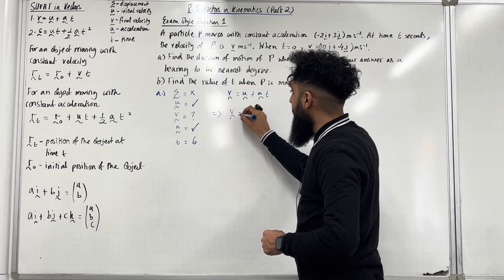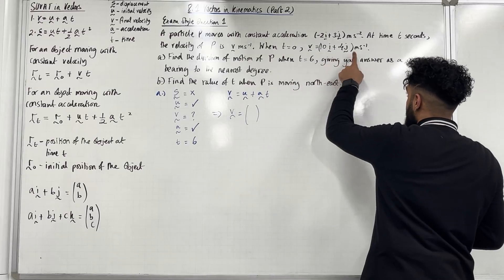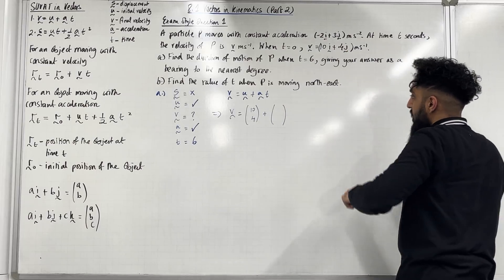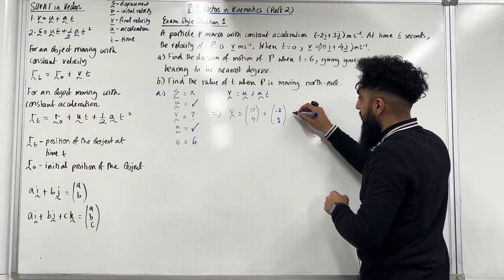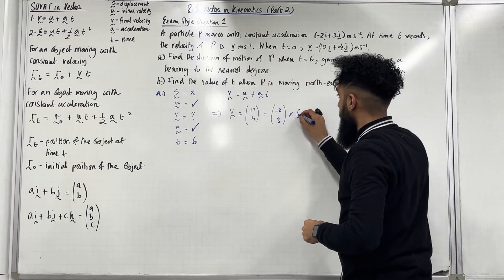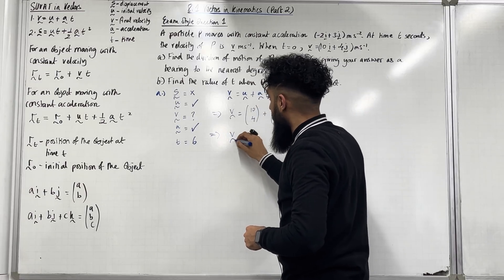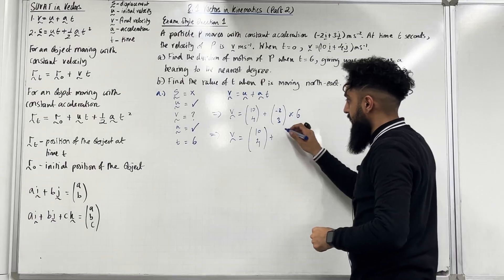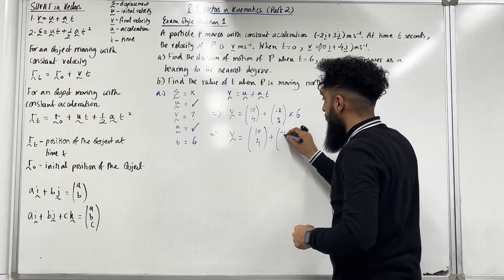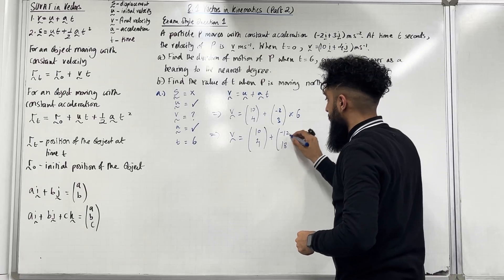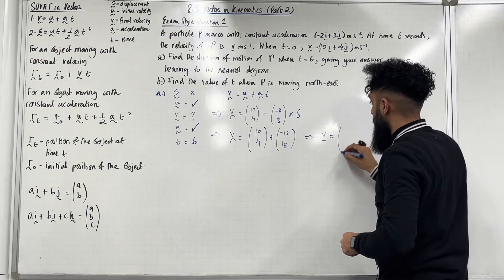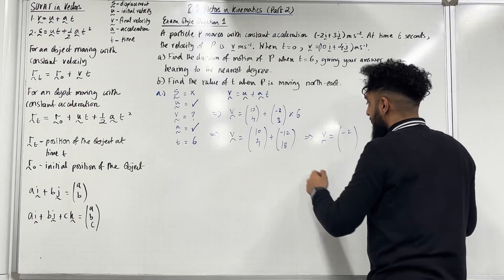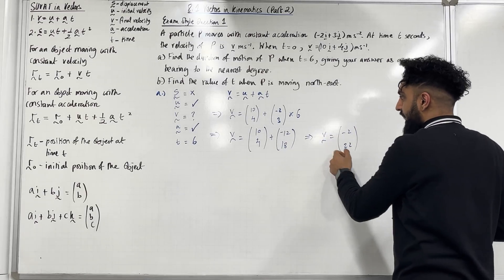V is equal to the initial velocity (10i + 4j), written as column vector (10, 4), plus the acceleration (−2i + 3j), written as (−2, 3), multiplied by T = 6. We multiply the i and j components by 6: −2 × 6 = −12, and 3 × 6 = 18. Adding the two vectors: 10 + (−12) = −2, and 4 + 18 = 22. So the velocity vector when T = 6 is (−2, 22).